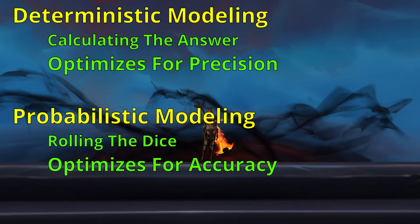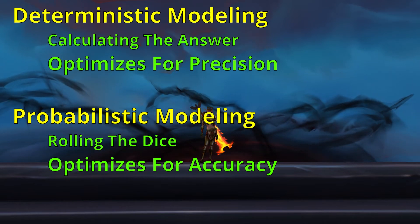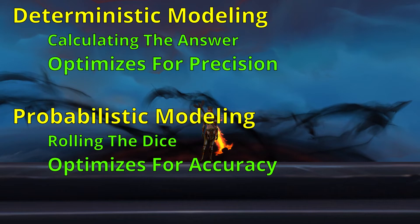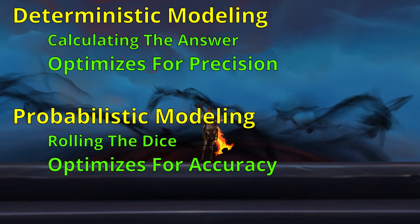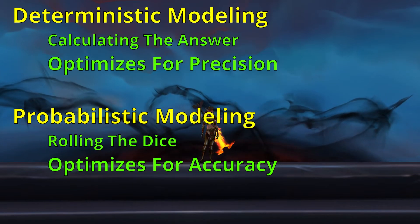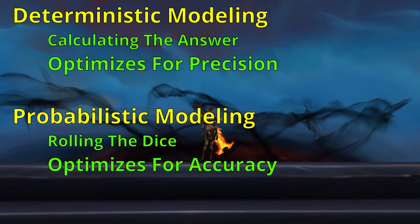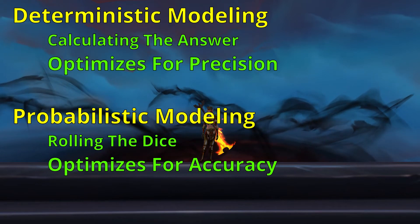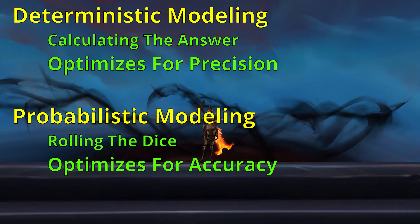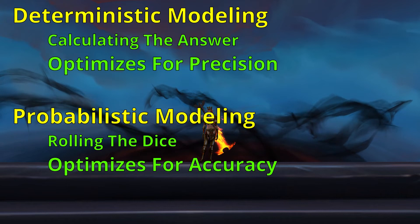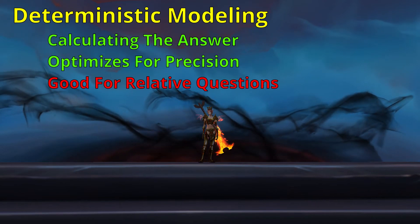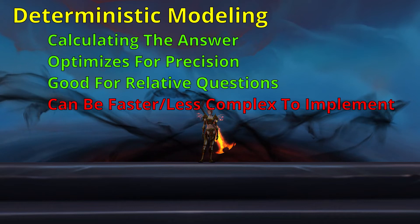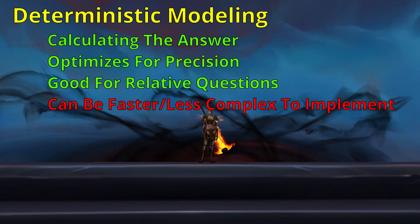A deterministic model will always give you a consistent answer, and small changes to the inputs will consistently give different results. However, if there are any errors in the calculations, then these models will consistently give you a wrong answer. A probabilistic model, on the other hand, will on average give you the right answer eventually, but small changes might not produce a noticeably different result. Because probabilistic modeling is effectively just like rolling the dice, the answers that it gives are affected by randomness. It's entirely possible that you could roll those 10 dice 10 times and every single time they would all land on 6, but as you keep rolling more and more, the proportions of each outcome that you see tend to get closer to the actual probability. Because deterministic modeling optimizes for precision, this means that they're good at answering relative questions, and you don't necessarily need to account for all of the variables that an accurate tool would need to.